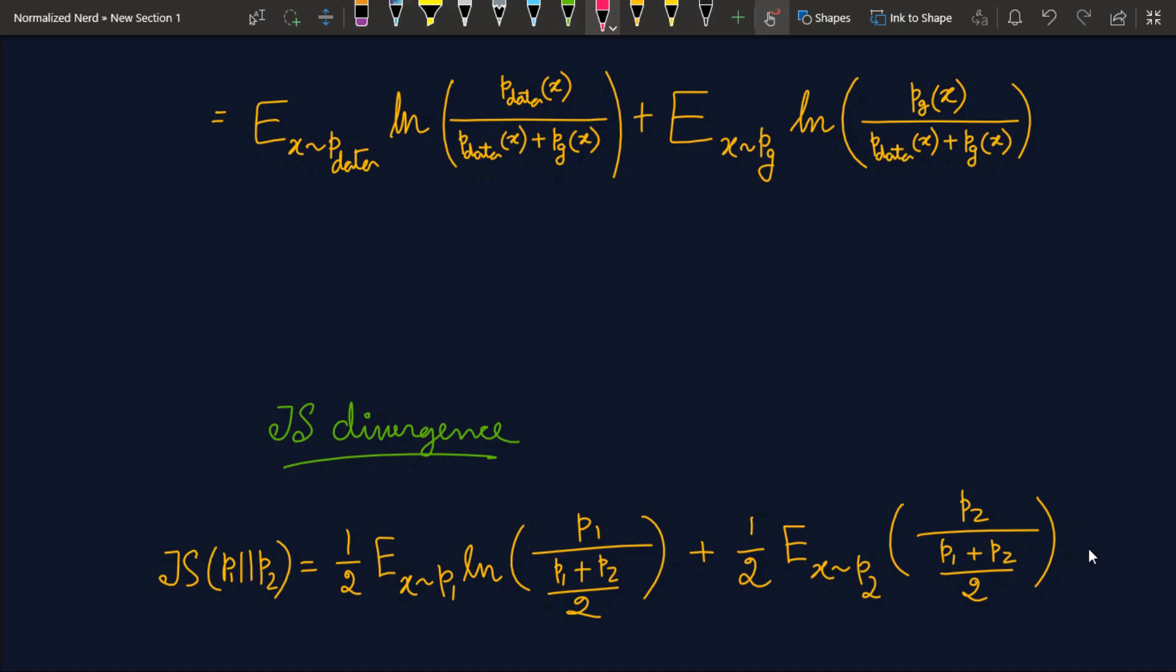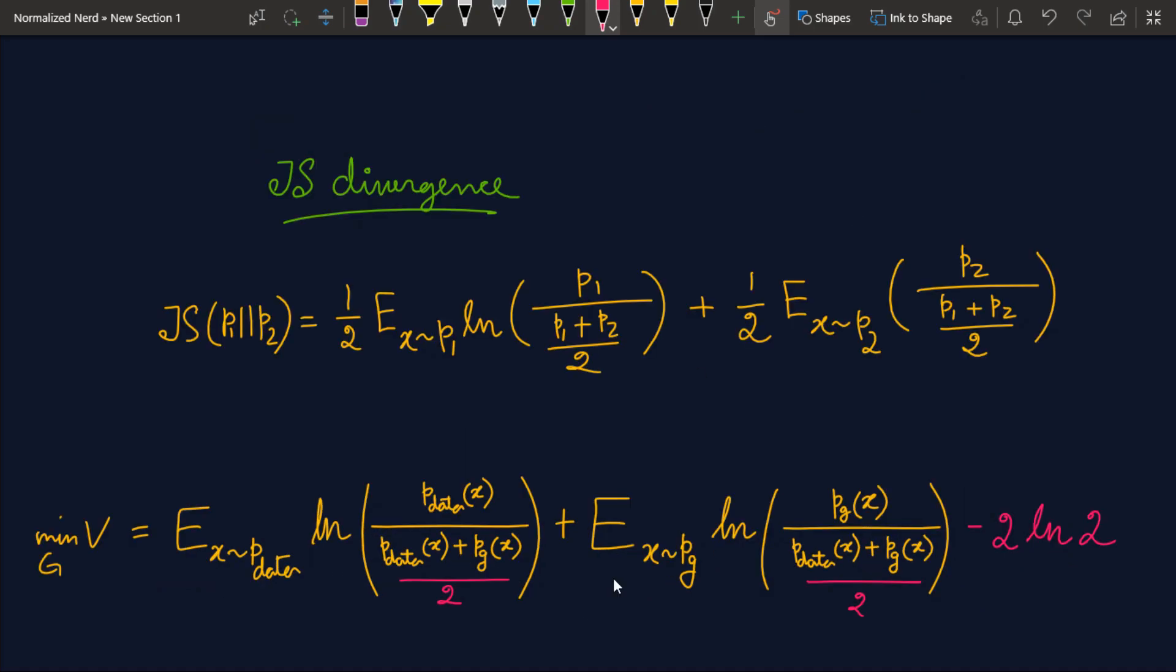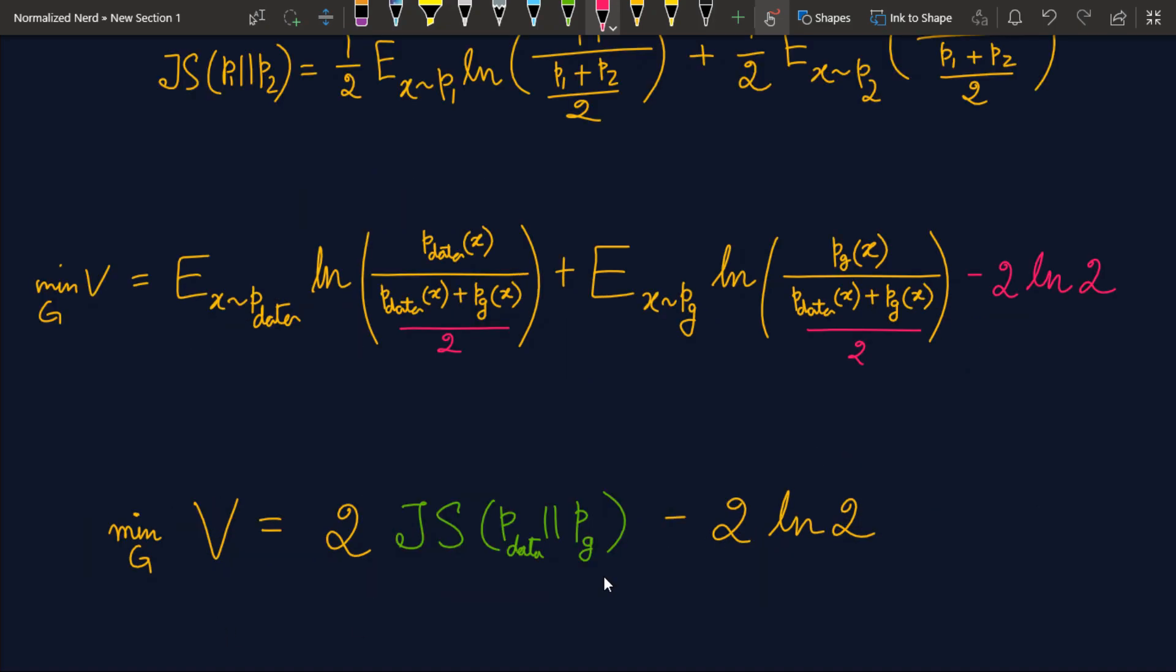Now let's see if we can somehow get to the JS divergence from this thing. Okay? So after the little modification we are getting this. So what have we done here? We have just multiplied 2 in these two logarithms. And for this we need to subtract 2 times the ln 2 here. Alright? And if we look closely here, then this whole portion is actually equals to 2 times the JS divergence of Pdata and Pg. And obviously we have the negative 2 ln 2 here. So G wants to minimize this. What is the minimum value of this expression? Well, the JS divergence between any two distributions cannot be negative. The minimum it can get is zero.